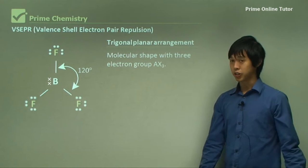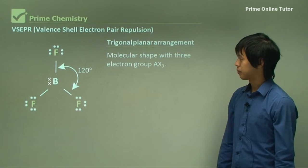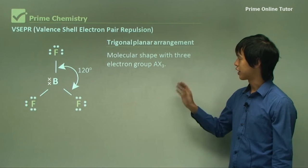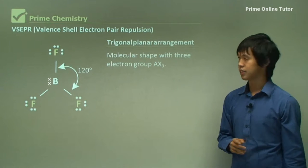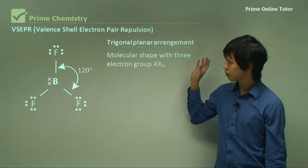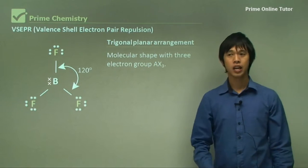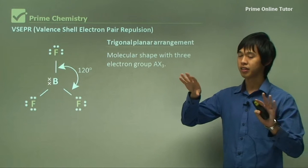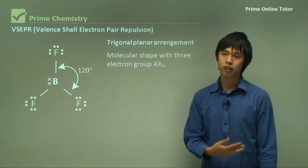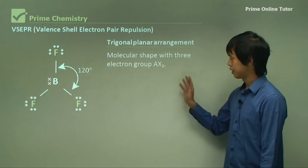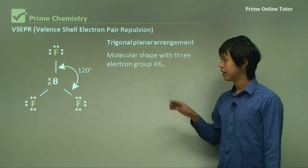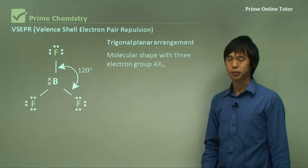So what are some other shapes? The trigonal planar arrangement. So in this one, the molecular shape with three electron group AX3. So in this case, we've got a central atom, A, and then three identical atoms, X. So in this case, we're looking at boron trifluorine. So you can see boron in the middle, 3-fluorine on either side, and the 120-degree angle in between.